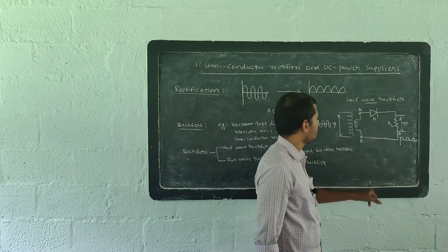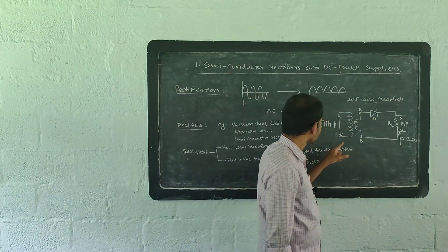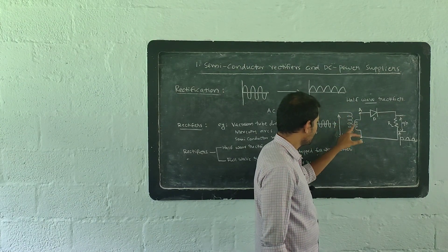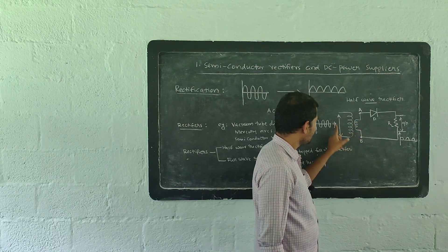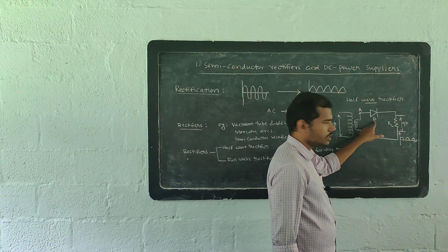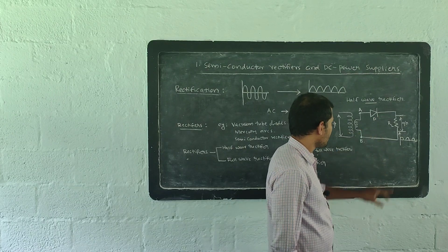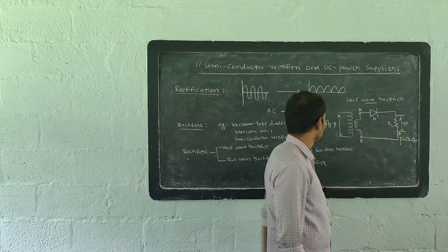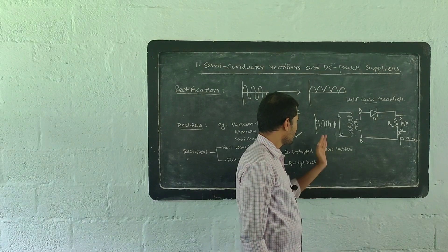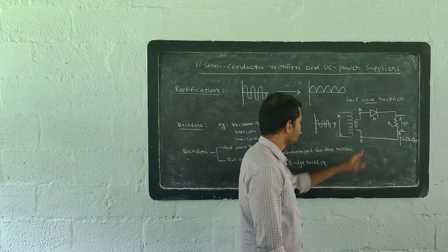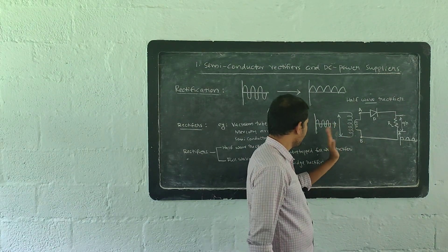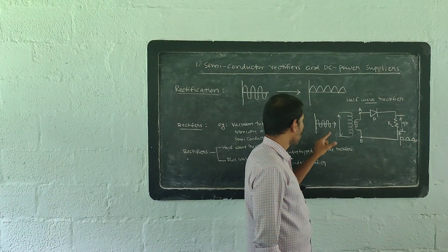The circuit of a half-wave rectifier is given here. We use a step-down transformer — number of primary turns is greater than number of secondary turns. A single diode is used here along with a load resistor. We input AC signal to the primary of the step-down transformer. The transformer decreases the voltage; otherwise, the diode will be damaged due to the high voltage. So we step down the initial input voltage, then input it to the diode.